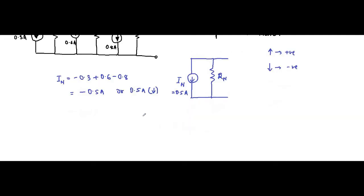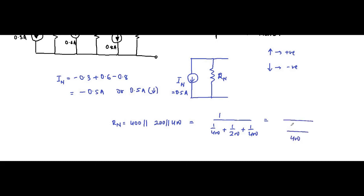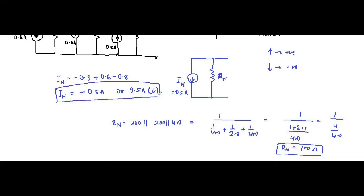Next is the equivalent resistance RN, found from the parallel combination. It is 400 ohm in parallel with 200 ohm in parallel with 400 ohm, which gives 1 over (1/400 + 1/200 + 1/400) = 1 over (1+2+1)/400, so the equivalent resistance RN is equal to 100 ohm. This is the Norton equivalent circuit as per Millman's theorem.